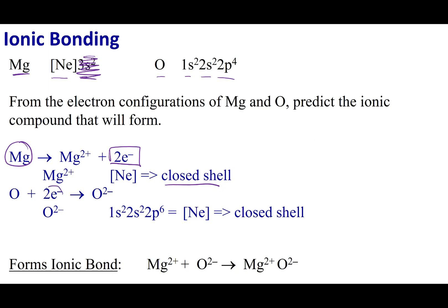For oxygen, I can gain two electrons. What you'll notice is I will get this electronic configuration, which corresponds to neon. So what I get is a closed-shell once again.